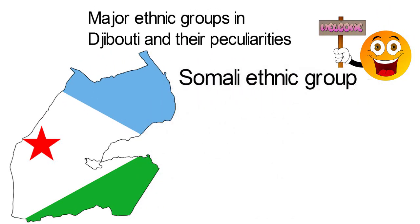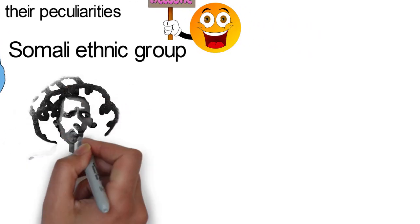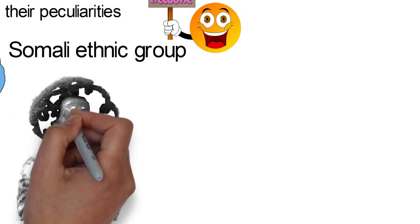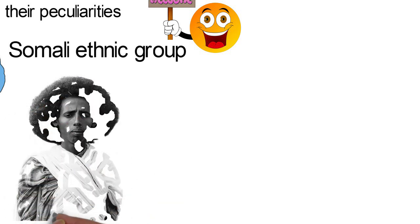Somali Ethnic Groups. The Somali are part of the Kushitic people native to Greater Somalia. They speak the Somali language, which is part of the Kushitic branch of the Afro-Asiatic family.